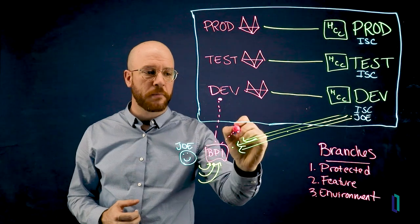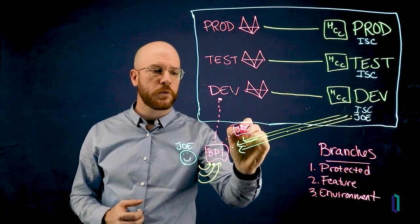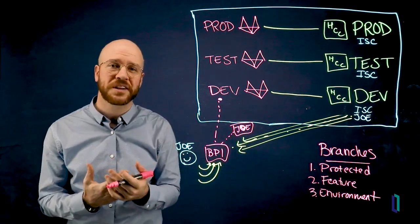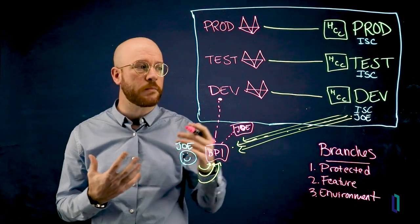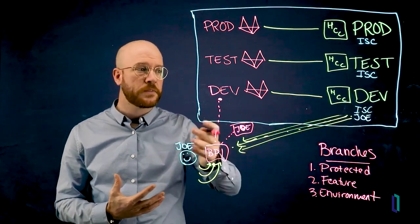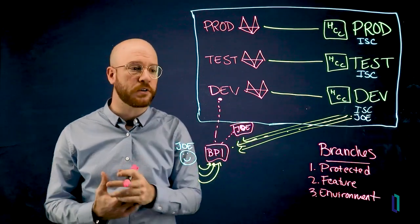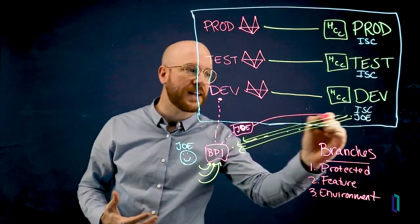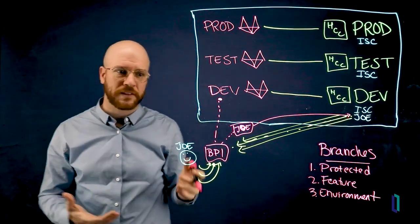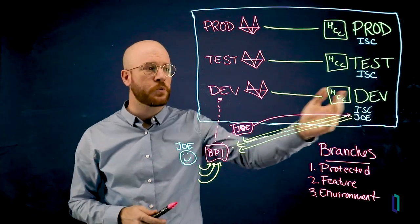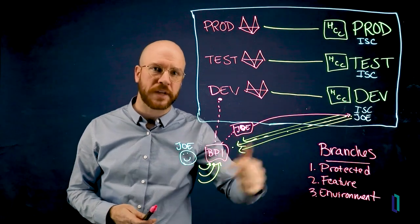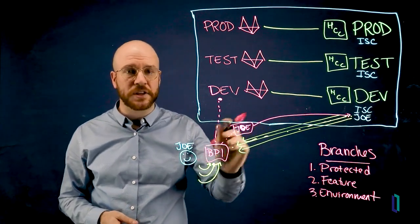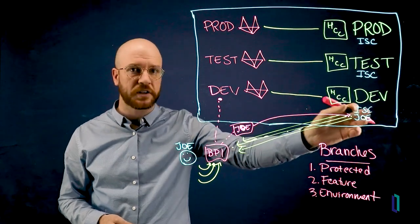What Joe can do now is utilize the environment branch that we talked about earlier. If Joe creates a new branch from BP1 and he names it Joe, this will be an environment branch. Now the key important thing here is that the name of this branch is Joe. Because what GitLab is doing is GitLab is constantly checking to see if there is a namespace on the associated deployment of HealthConnect Cloud that is named the same as the branch that has been created. In this case, the branch Joe actually matches the Joe namespace. And what GitLab does automatically is deploys the contents of this branch to the namespace.